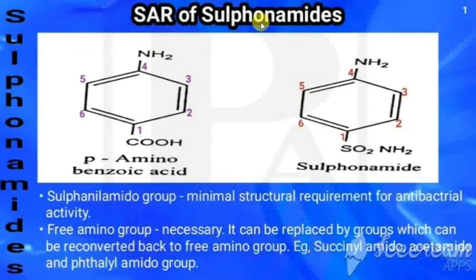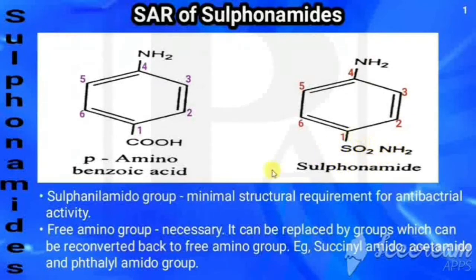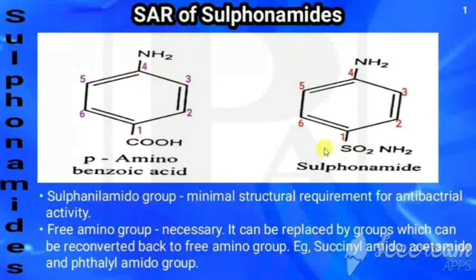In this class we are going to see the structure of sulfanilamide. It has a benzene ring with an SO2NH2 group in the first position and a free amino group (NH2) in the fourth position. It has structural similarity with PABA, that is para-aminobenzoic acid — PABA has a carboxylic acid in the first position whereas sulfanilamide has SO2NH2, and both have the same amino group in the fourth position.